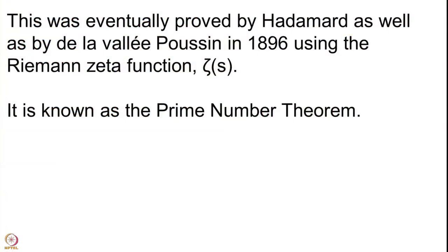Once a result is proved and quoted many times, you need to name it. Do you call it Hadamard's result, or de la Vallée Poussin's theorem, or Legendre's conjecture, or Gauss's conjecture? Since there were several people involved, mathematicians simply decided to call it the prime number theorem. This result later came to be known as the prime number theorem.